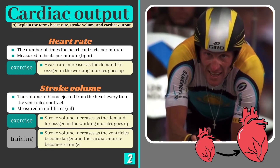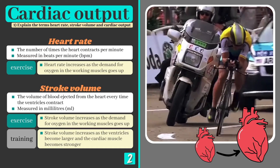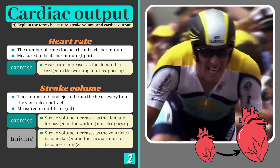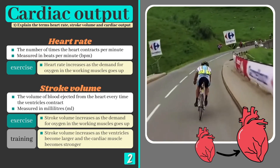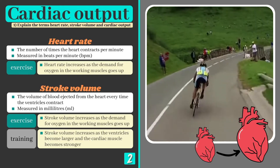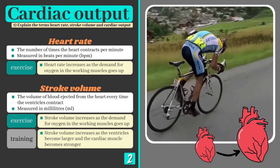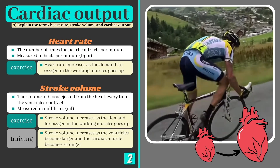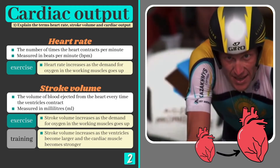Lance Armstrong, the most successful cyclist of all time prior to his involvement in a blood doping scandal, had a stroke volume almost two times that of an average male, enabling him to pump huge quantities of blood with each heartbeat.